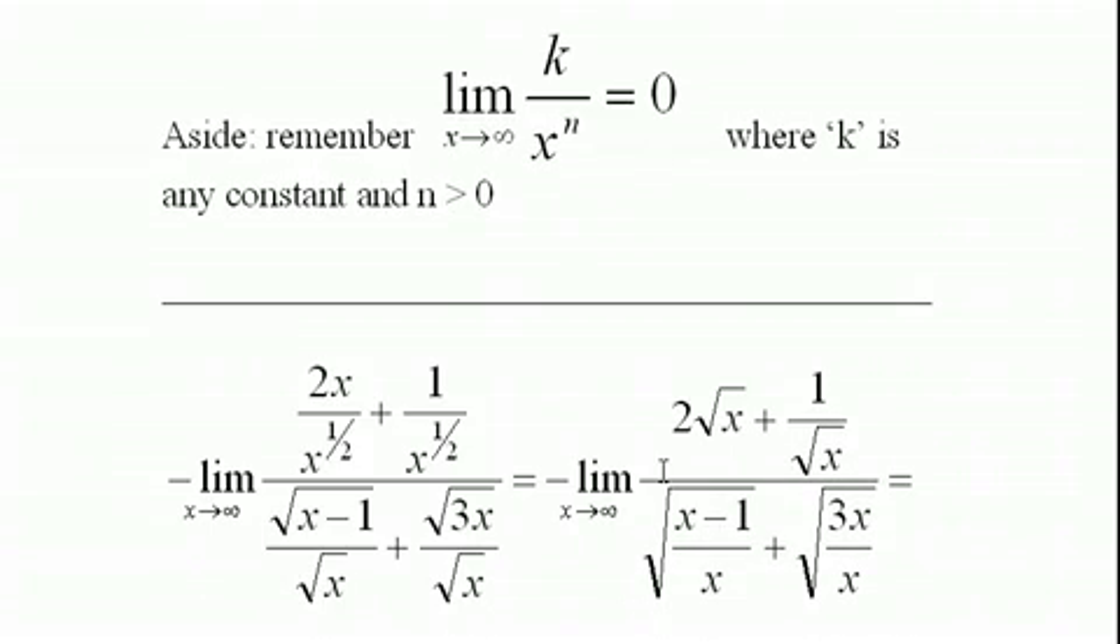Here we are, back at this expression again. I think what we want to do is we can cancel out x's here and end up with—in other words, this is x to the one, x to the one half, so I can subtract one half from one and end up with the square root of x to the one half, or the square root of x.